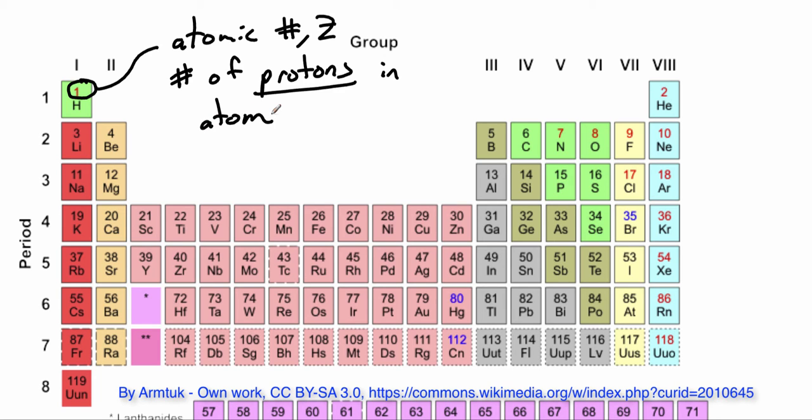The atomic number actually has a symbol, Z, and it is simply the number of protons in the atom. Since you always have a periodic table, you can always tell the number of protons in any particular element. For instance, if we were to look at boron, we immediately know that boron has five protons. Let's use the periodic table to analyze a neutral atom. Let's look at an atom of sodium.